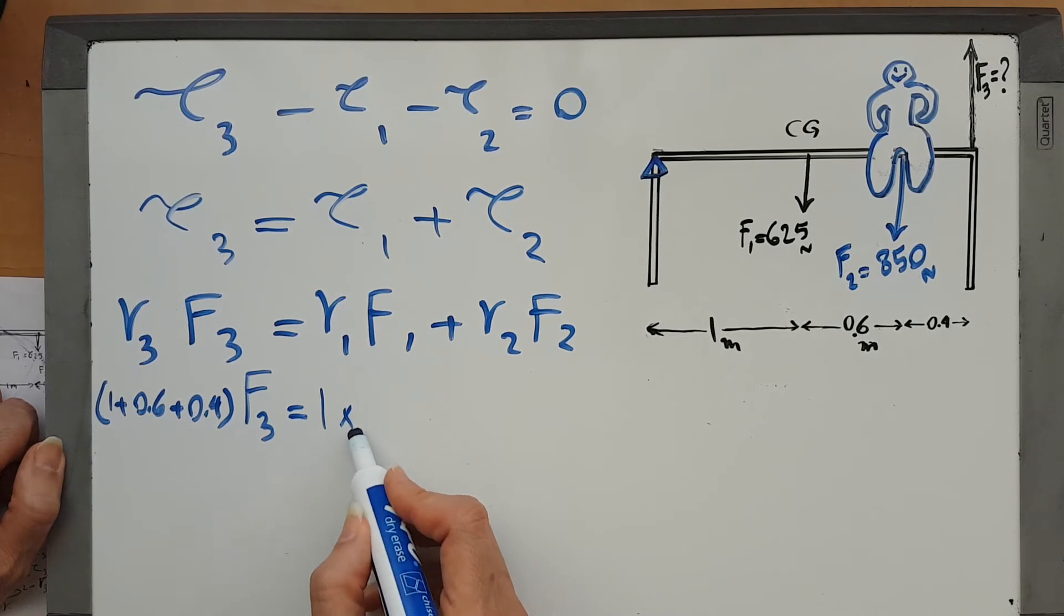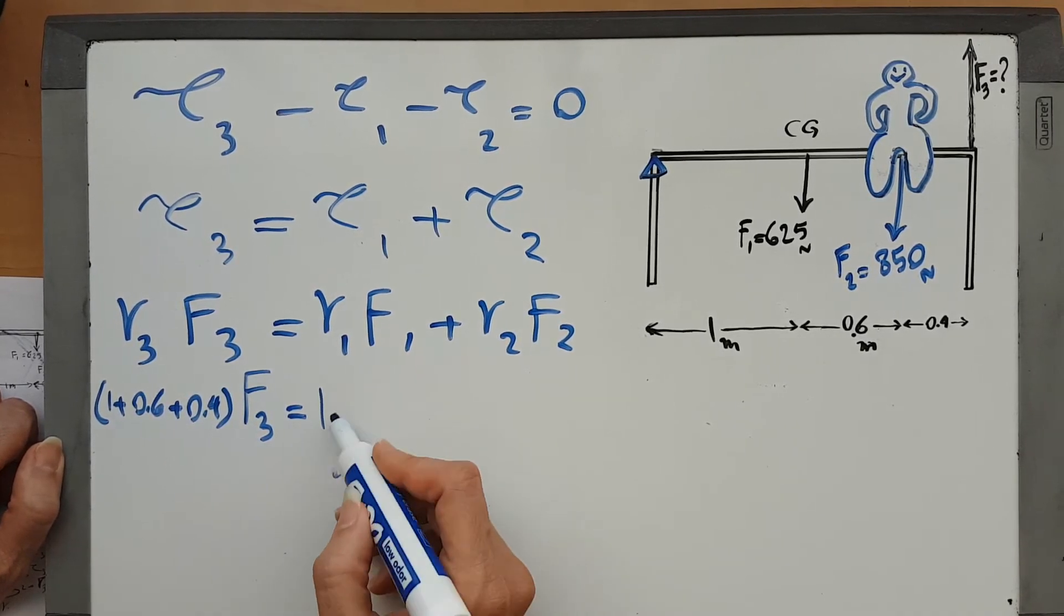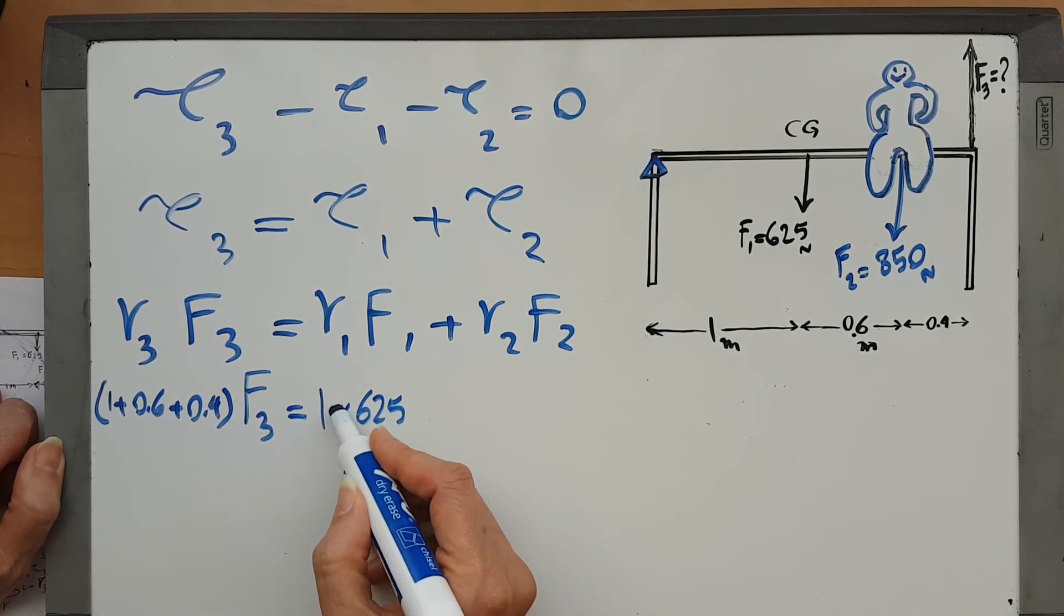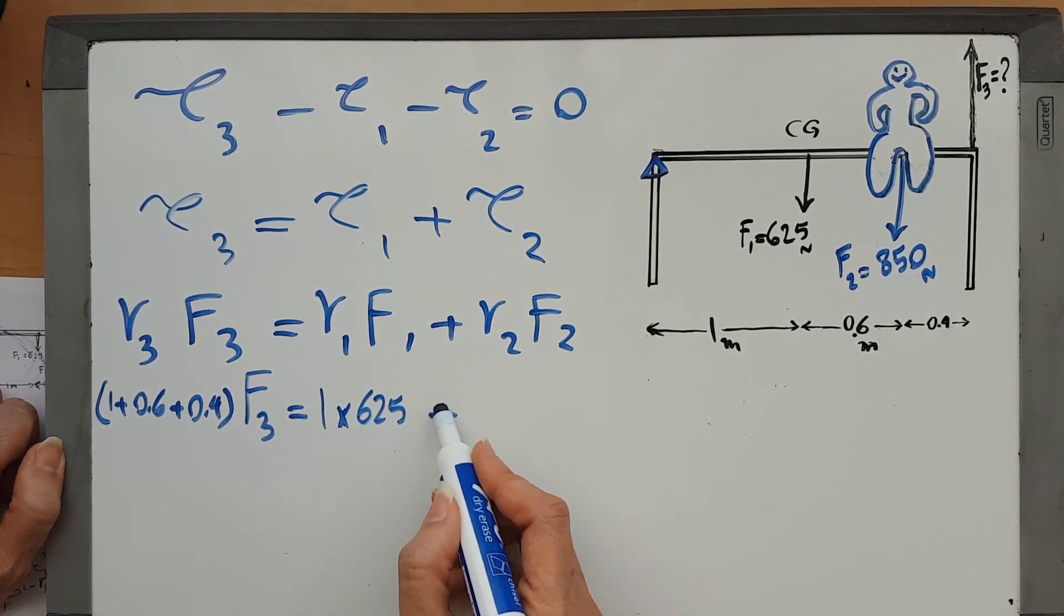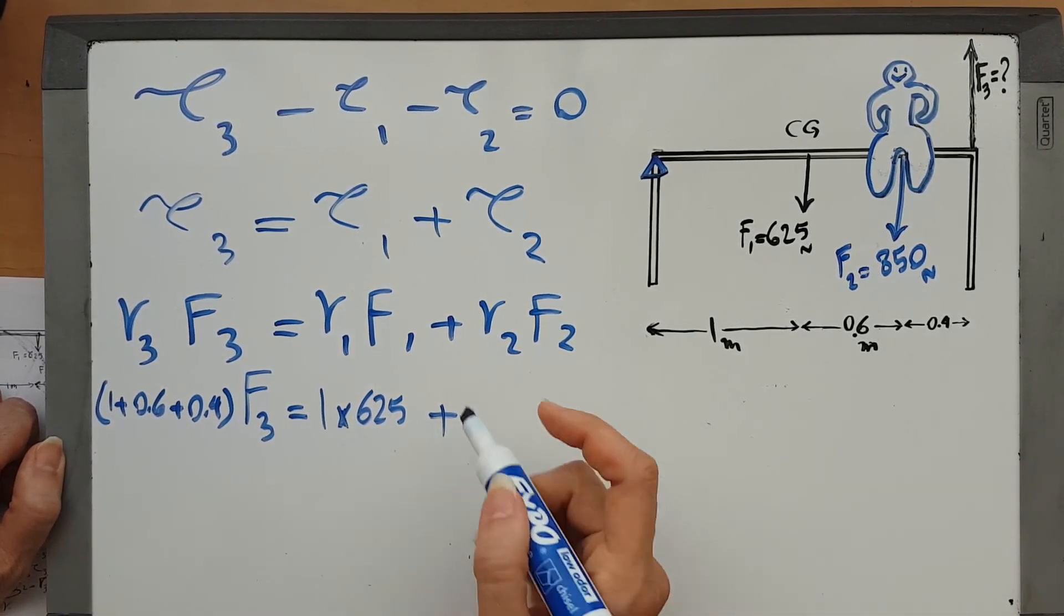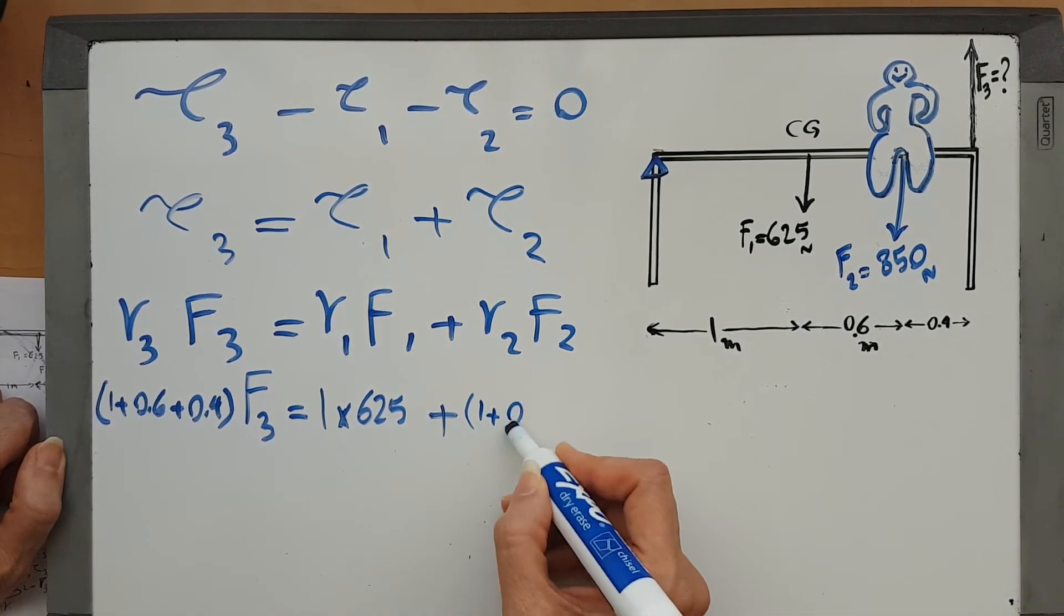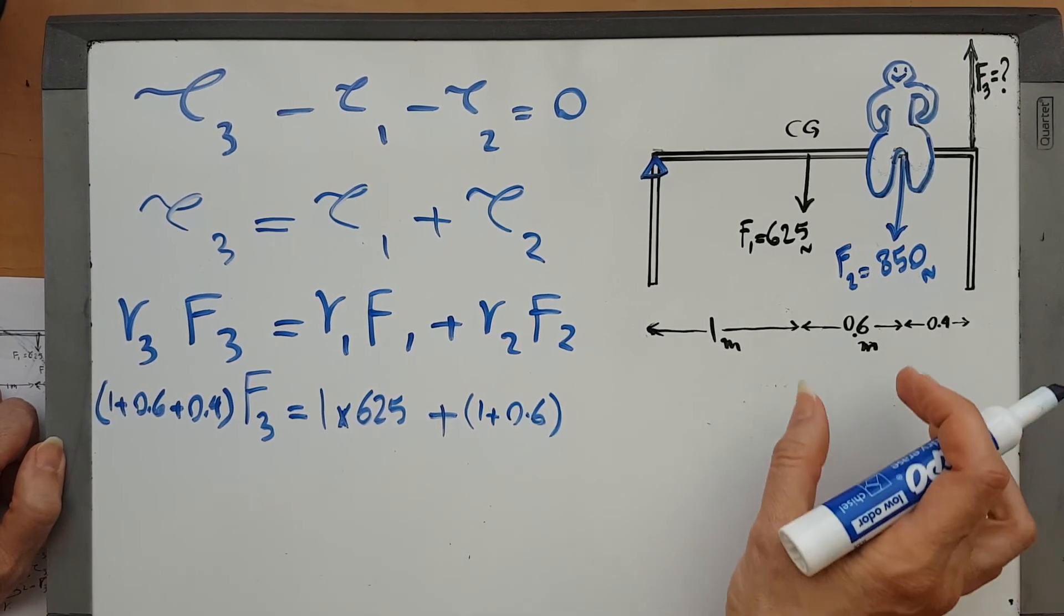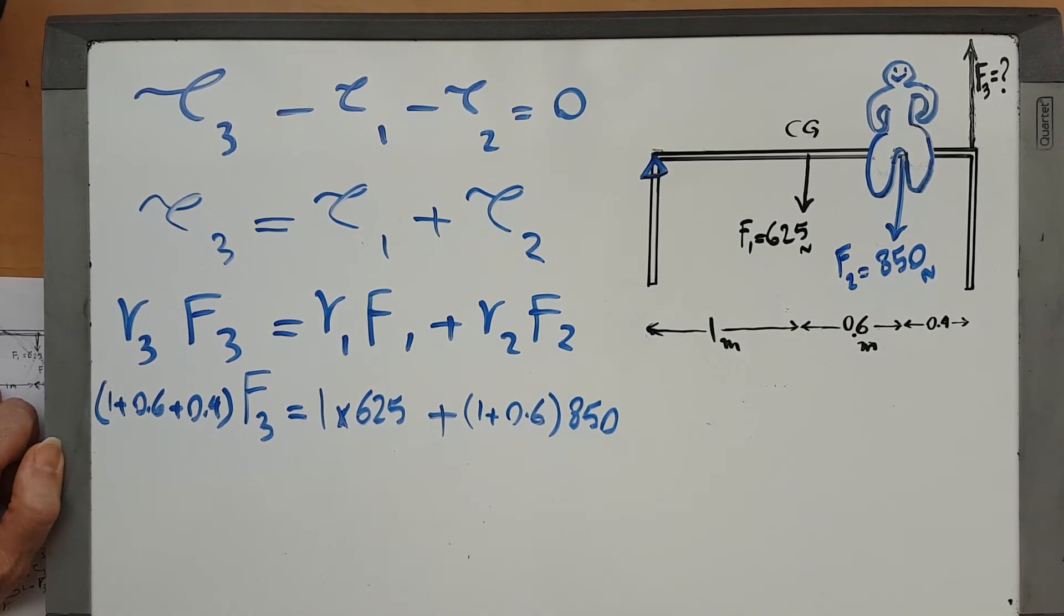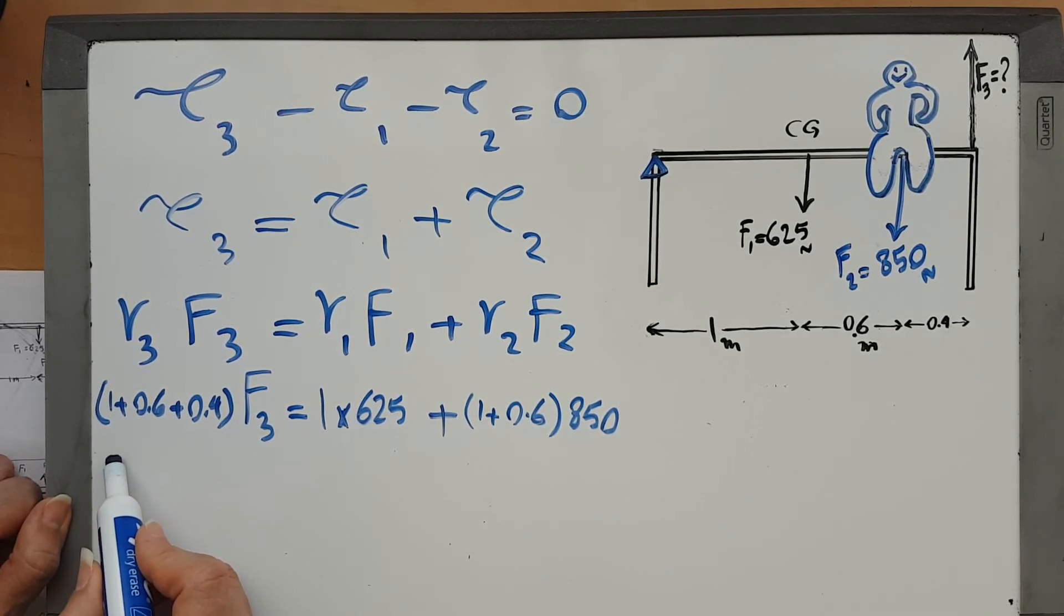R1 is 1 times F1, which is 625. Plus r2, which is 1 plus 0.6 times F2, which is 850. In here I would have 2, the whole thing 2 F3, and this would be 625 plus 1.6 times 850.